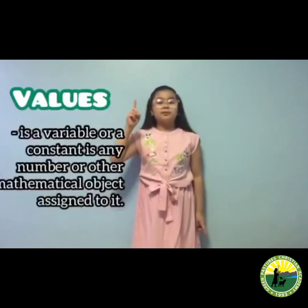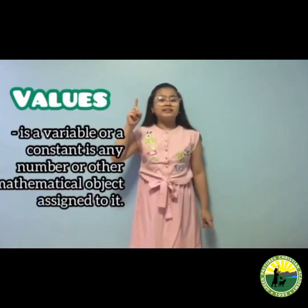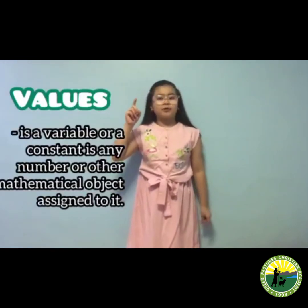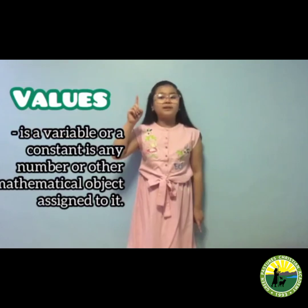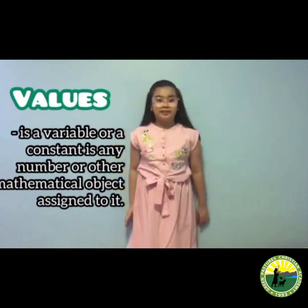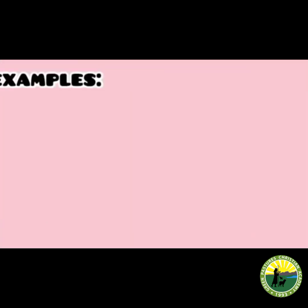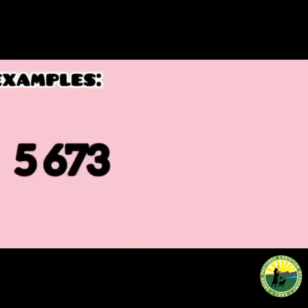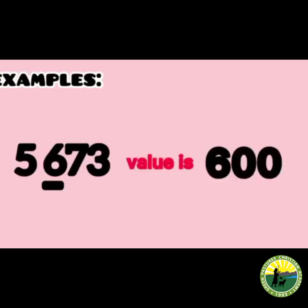Now, value is a variable or constant — any number or other mathematical object assigned to it. So in 5,673, look at the number 6. Its value is 600 because its place value is hundreds.